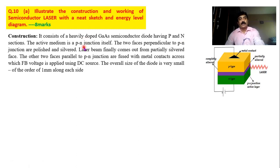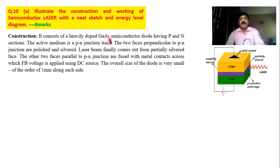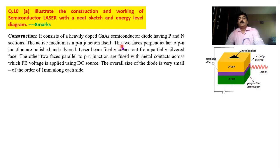An important point to mention: it is not a normal semiconductor — it is heavily doped, meaning the charge carriers are very large in number. That is a major difference between LED and semiconductor laser. In LED we have only nominal doping, whereas in semiconductor laser we have heavy doping. It consists of heavily doped gallium arsenide semiconductor diode having p and n sections. The active medium is the p-n junction, because the whole lasing action takes place only in the junction region.